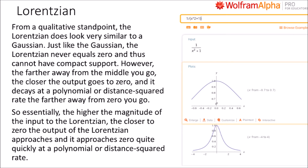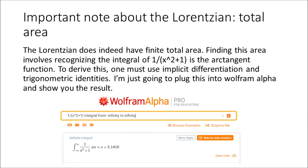Just like the Gaussian, the Lorentzian never equals zero and thus cannot have compact support. However, the farther away from the middle you go, the closer the output goes to zero, and it decays at a polynomial or distance-squared rate. The Lorentzian does indeed have finite total area. Finding this area involves recognizing that the integral of 1/(x²+1) is the arctangent function — to derive this, one must use implicit differentiation and trigonometric identities. I'll plug this into Wolfram Alpha and show the result.